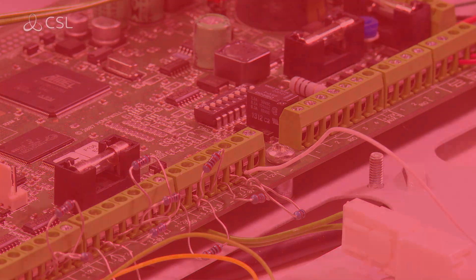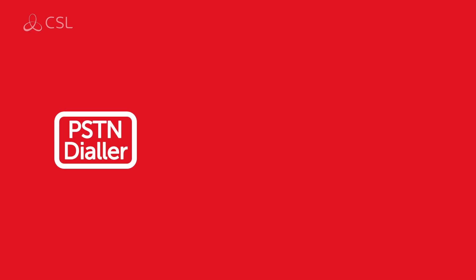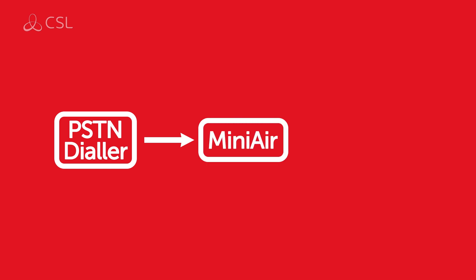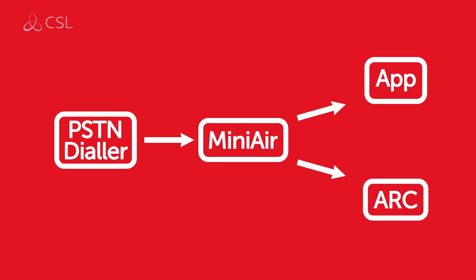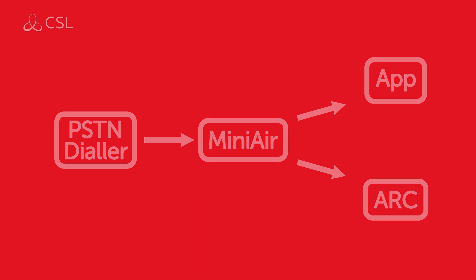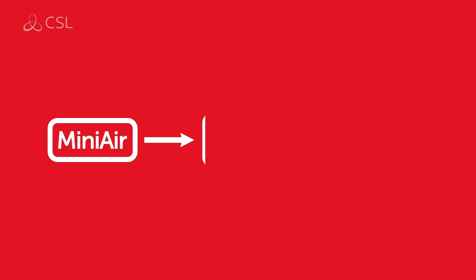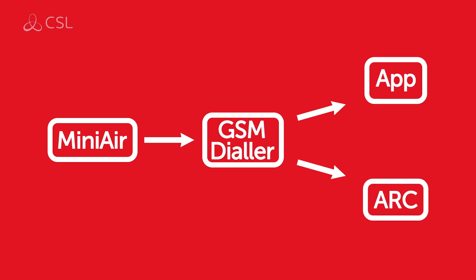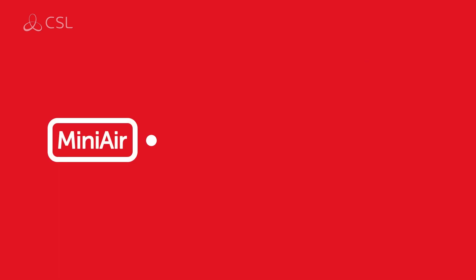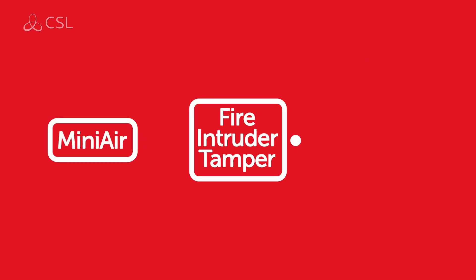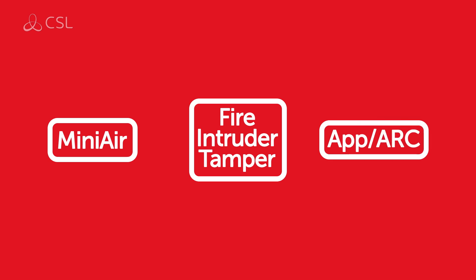The MiniAir can be set up to signal in three different ways. In the first option, MiniAir sends the alarm communications via a PSTN dialer to the app or ARC, and can be set and unset remotely via the app. The second option enables MiniAir to send alarm communications via the GSM dialer to the app or to the ARC. In the third option, MiniAir sends a single alarm notification via an output to the app or ARC — this could be for a fire panel, intruder alarm, or tamper alarm.